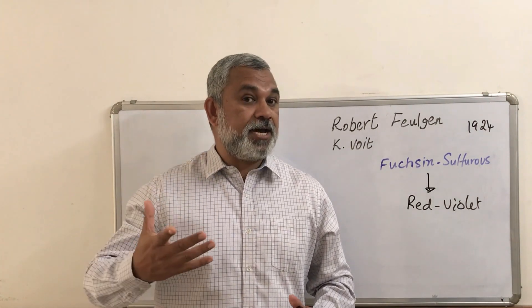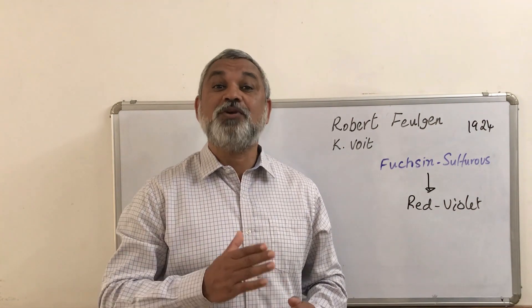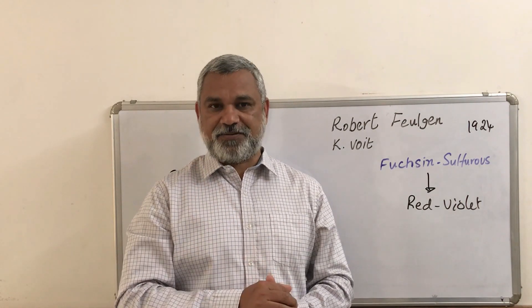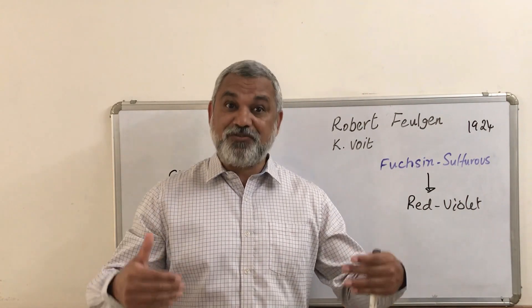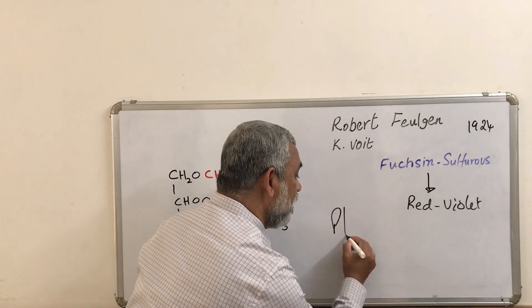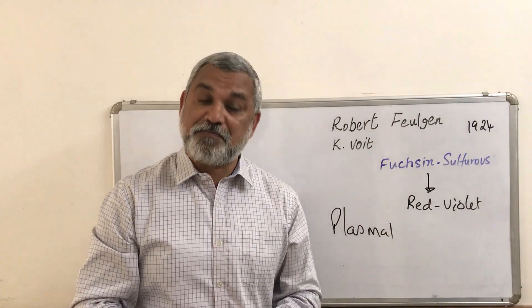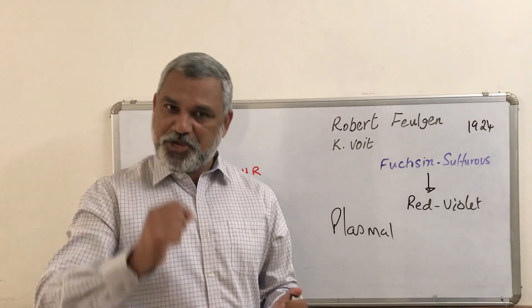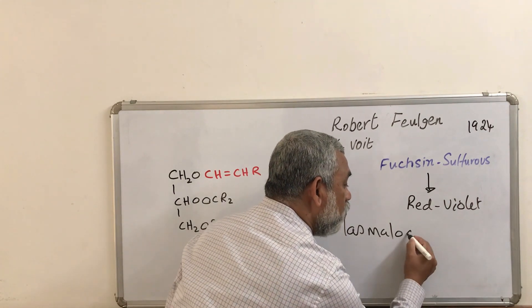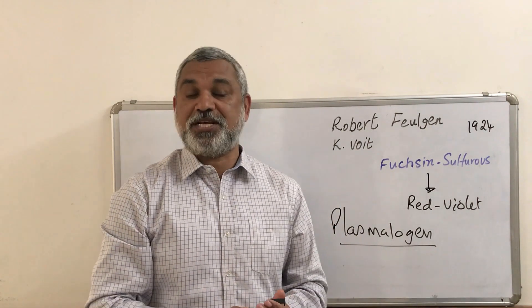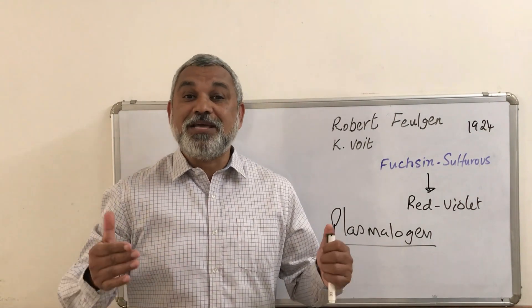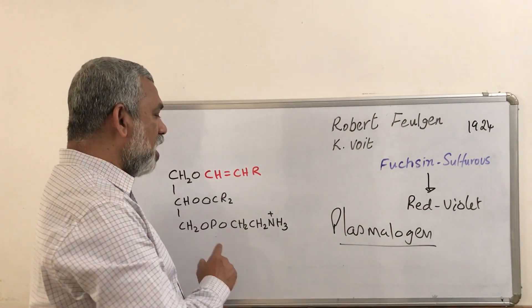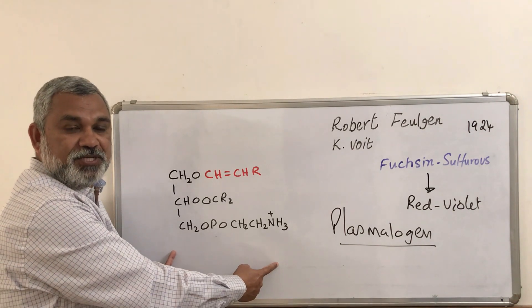What Feulgen thought was that it must be an aldehyde in the cytoplasm. At that time there were many studies going on with regard to glycolysis, and he thought it should be acetaldehyde originating from what is observed in plasma. Therefore he called it 'plasmal,' originating from plasma, thinking there was an original molecule from which this was produced. He called it 'plasmalogen,' and that is how the name plasmalogen came into existence.